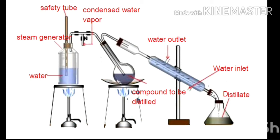Through the other hole of the cork, a bend tube is placed and inserted into a distillation flask through a rubber bung. Through the other hole of the rubber bung, there is a delivery tube that connects the distillation flask and the condenser. The condenser is connected to a receiver via an adapter. The steam generator and the distillation flask are heated simultaneously to get a uniform flow of vapour through the boiling mixture.